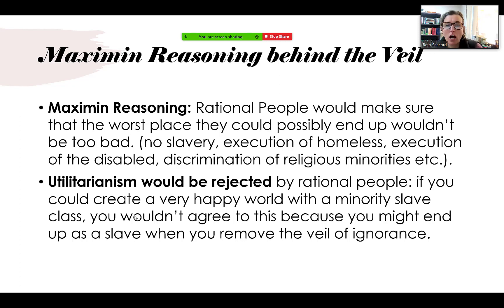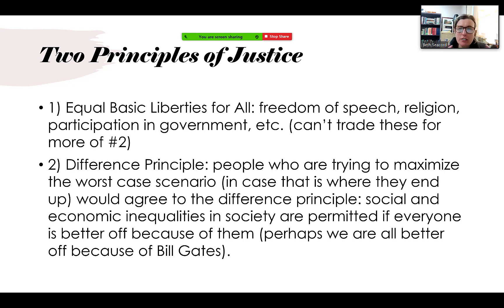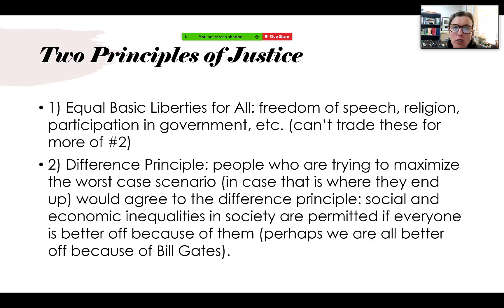A person behind the veil of ignorance would not agree to this because you do not know if you will be that kid. So by using maximin reasoning, these are the two principles of justice that Rawls says rational, disinterested people behind the veil of ignorance would agree to. People would never trade away their freedoms — freedom of speech, religion, equality in the eyes of the law, participation as equal citizens in government. Basic liberties and the freedom to pursue your idea of the good.